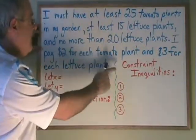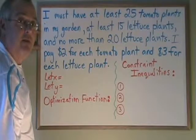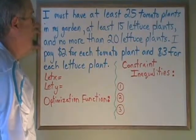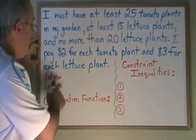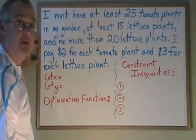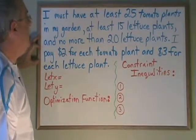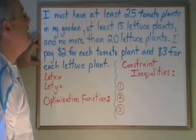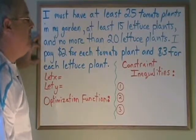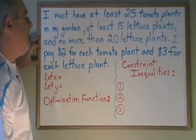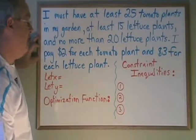The numbers that have to do with money tend to be what you use in your optimization function. Before you can make either type of equation, you have to define your x and y variables. In this case, I have at least 25 tomato plants in my garden, at least 15 lettuce plants, and no more than 20 lettuce plants. I pay $2 for each tomato plant and $3 for each lettuce plant.